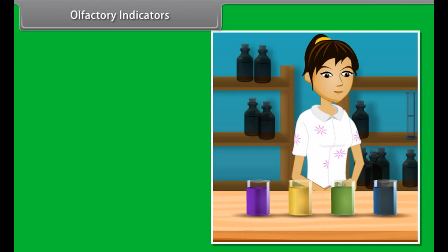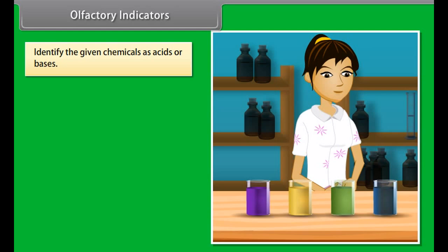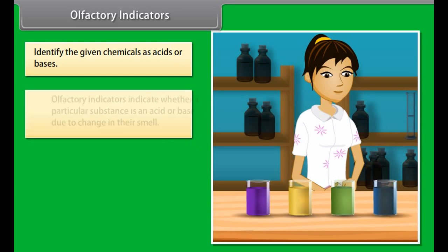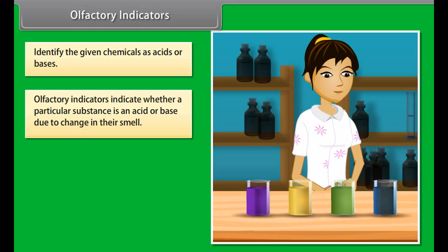Olfactory Indicators. Suppose you are given four chemicals and asked to identify them as acids or bases. How will you do it? Let us find out. We have olfactory indicators, which indicate whether a particular substance is an acid or base due to change in their smell. An olfactory indicator works on the principle that when an acid or base is added to a substance, then its odor cannot be detected.